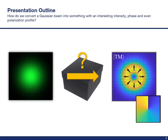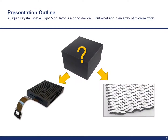So how do we convert a Gaussian beam into something more interesting? Perhaps with a structured spatial intensity, phase, and even polarization? I'll start this talk with a brief introduction to what I mean by structured light. The tool of choice for many in the field are liquid crystal spatial light modulators. I'll discuss how these are used in more detail later, but more importantly, can we use something different? Can we use an array of tiny mirrors to control an incident laser beam and modulate the phase and polarization of that beam, along with the intensity as one would expect from a mirror? The answer is yes, and my objective in this talk is to briefly explain how. But first, let's start with structured light.